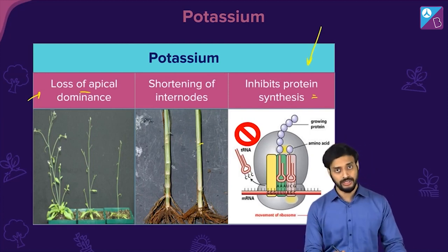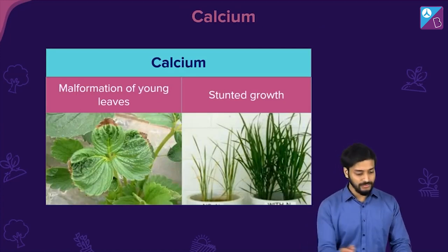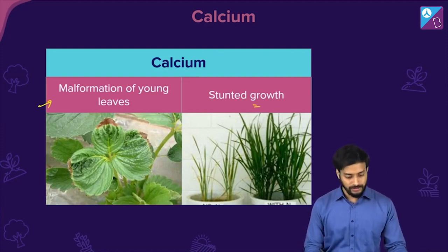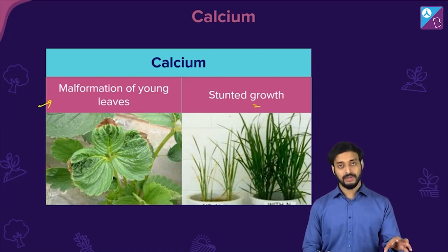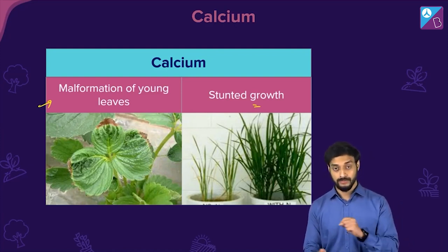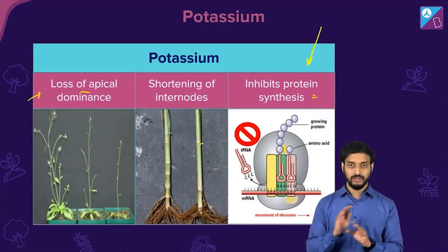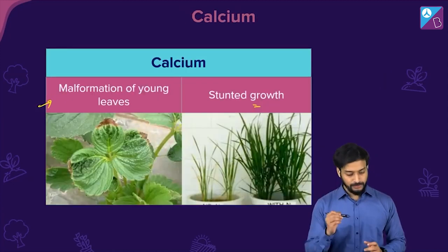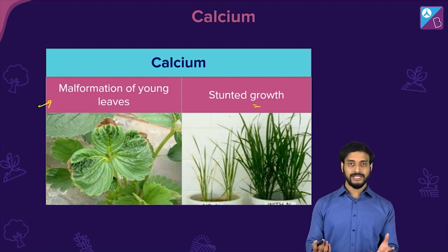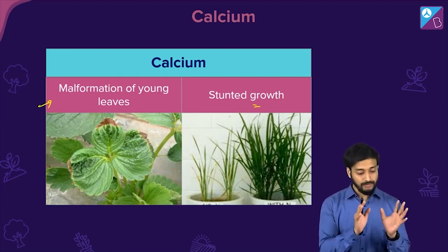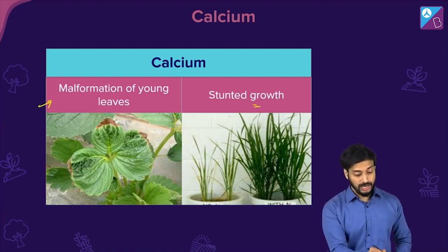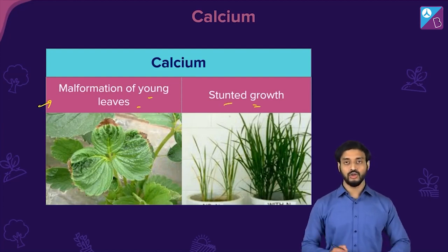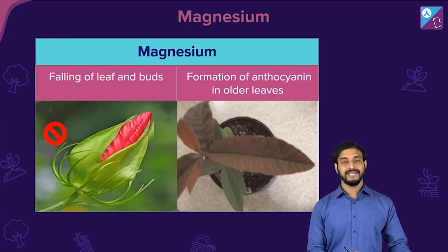Calcium is a structural element. Its deficiency causes malformation of young leaves and stunted growth. Recap: potassium deficiency leads to loss of apical dominance, shortening of internodes, and inhibition of protein synthesis; calcium deficiency causes malformation of young leaves and stunted growth.